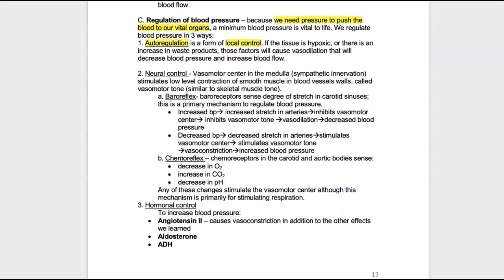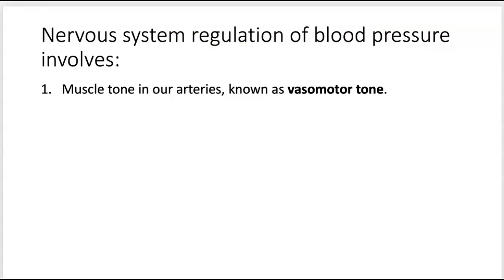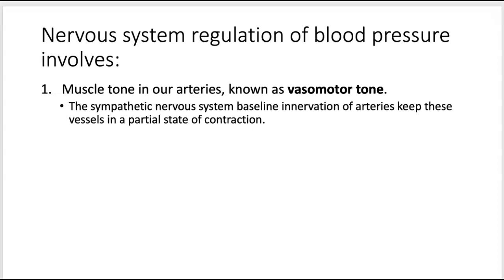A better way to control body-wide blood pressure is through the nervous system. The two baseline facts that make it easier to understand nervous system regulation of blood pressure: our arteries — remember we talked about how the tunica media is very well developed in arteries with a very thick muscular wall — those arteries have muscle tone, a partial state of constriction. This is known as vasomotor tone, which is the result of the sympathetic nervous system innervating that smooth muscle and keeping those arteries in a partial state of contraction.